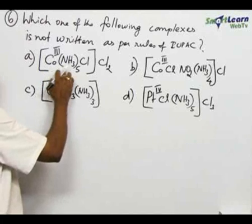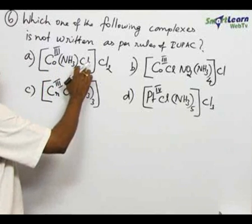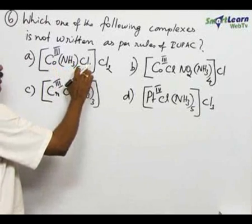So only in complex A, a negative ligand is coming after the neutral ligand. So that is not correct.